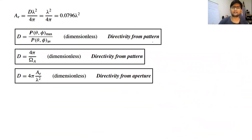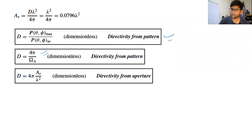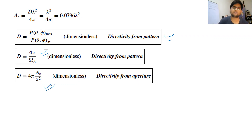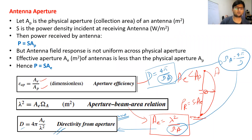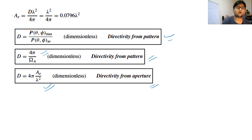So the formulas for directivity we have are: first, total power density in the maximum direction divided by average (isotropic) power density; second, D = 4 pi divided by omega-A, the beam solid angle; and the latest formula in terms of effective area: D = 4 pi times Ae divided by lambda squared. You must remember all these formulas as questions can come from them. From the last formula, we can define effective area as Ae = D times lambda squared divided by 4 pi.